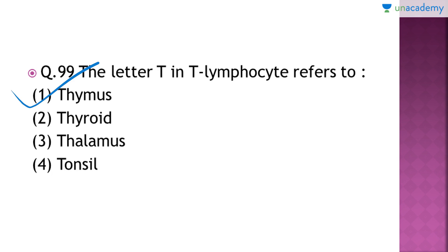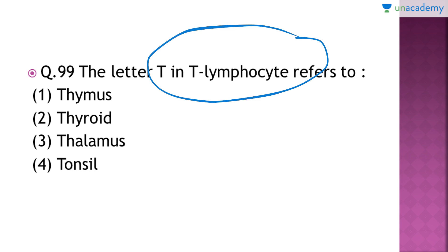There are two types of lymphocytes: T lymphocytes and B lymphocytes. T lymphocytes are produced and mature in the thymus, which is why they are named T lymphocytes. B lymphocytes produce and mature in the bone marrow, hence they are called B lymphocytes.